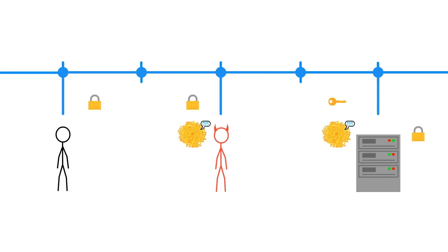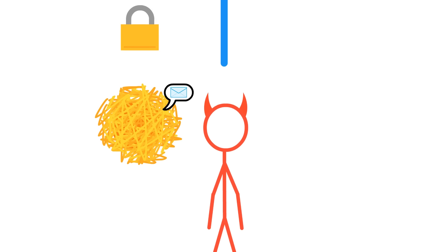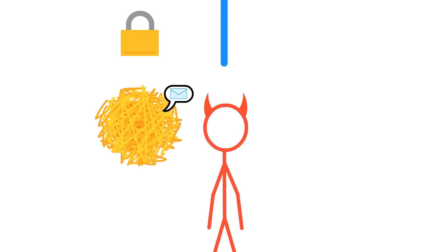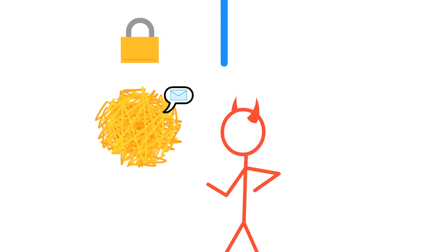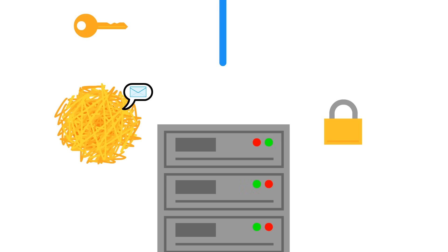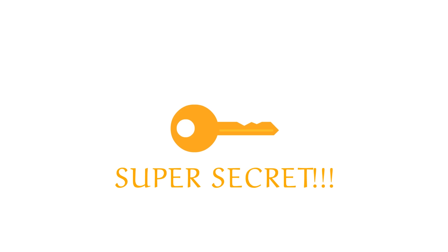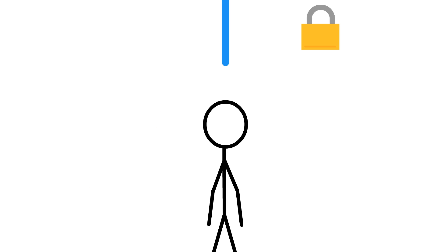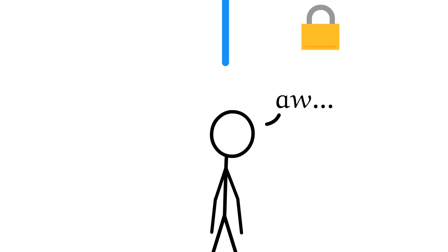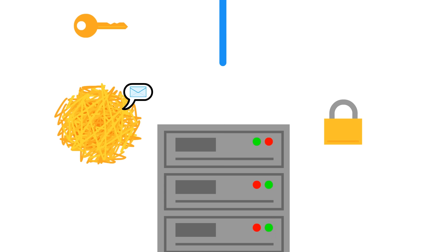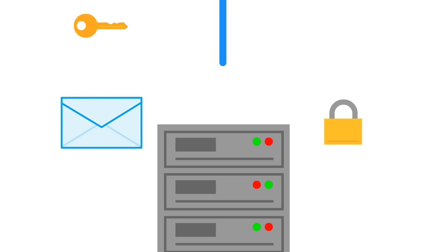Even if the eavesdropper makes their own copy of the public key, it's useless against a scrambled message. So how does the server unscramble it? It uses the private key. This key is super secret and no one but the server should ever have it — not even you. This private key was custom made to unscramble messages which this particular public key scrambled.